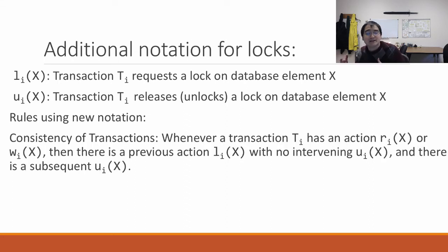And so the way we can actually write the previous rules using this notation, the rules for consistency of transactions is whenever a transaction I has an action, so that's a read of transaction I on X or a write of transaction I on X, there must be a previous action, which is locking I, L sub I of X, with no intervening unlocks U sub I of X, and there must be at some point a subsequent U of I of X. So it's saying you have to have the lock, not have already given it up, and eventually you must give it up. That seems pretty simple.